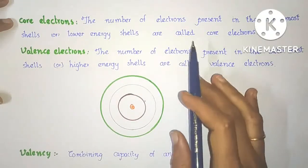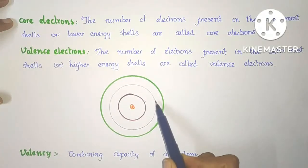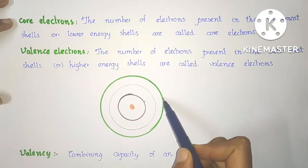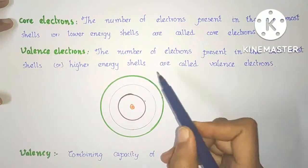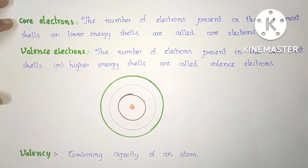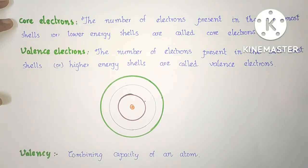Core electrons means the number of electrons present in the innermost shells or lower energy shells are called core electrons. The number of electrons present in the outermost shells or higher energy levels are called valence electrons. Valency is the combining capacity of an atom — that means the ability of an atom to form bonds with another atom.